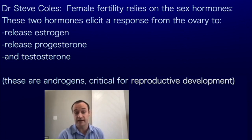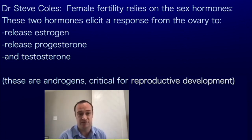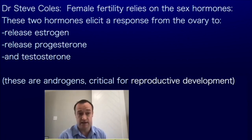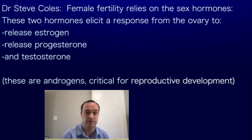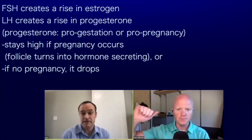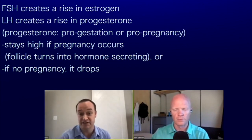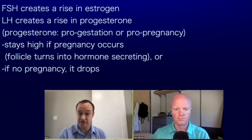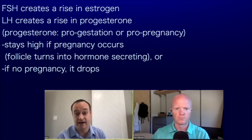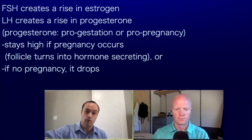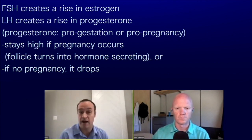FSH and LH go to the ovary and elicit a response of releasing estrogen or progesterone. The androgens, testosterone, progesterone, and estrogen are related and function differently in different areas of the body. The ovary in particular releases a large amount of estrogen and also a large amount of testosterone in the female body. As a basic rule, FSH especially creates an estrogen rise, and then LH will elicit progesterone to start to rise.